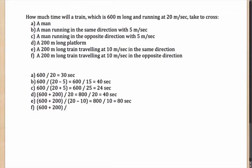Finally, in the last case, the distance to be covered is still 600 plus 200, since the other train is 200 meters long. Since they are moving in opposite directions, the relative speeds get added up, giving a relative speed of 30 m/s. So the answer is 800 divided by 30, or 80/3 seconds.